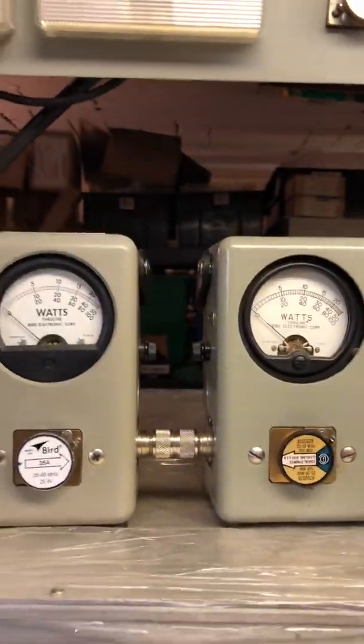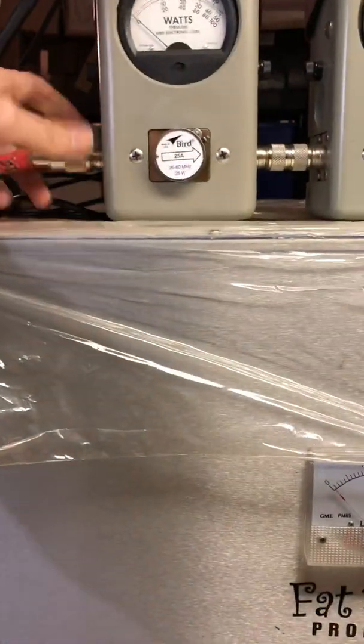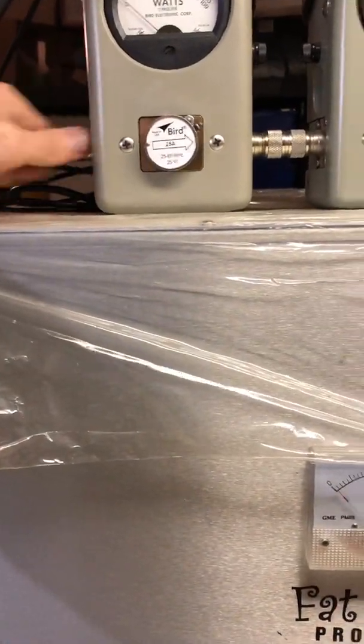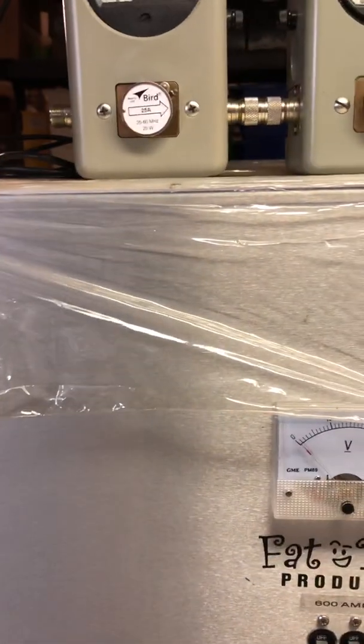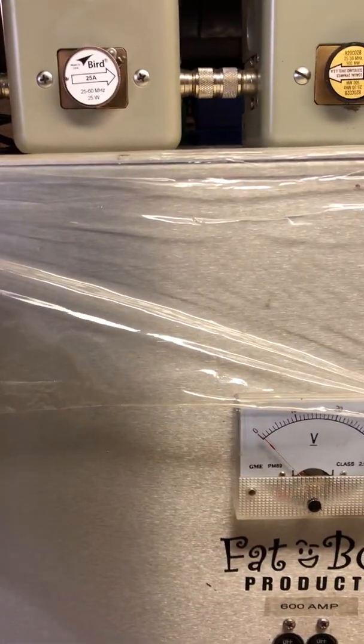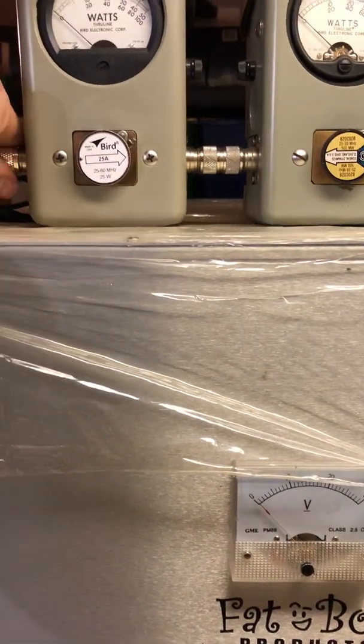So I'm going to plug the striker in. This radio does 35 RMS and about 70, 75 PEP. I will plug the striker in, put the amp on standby, and show you the pass-through tune with the striker.